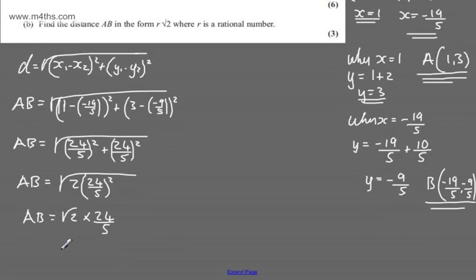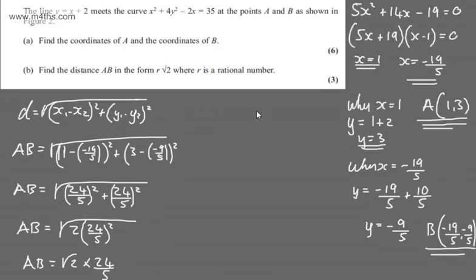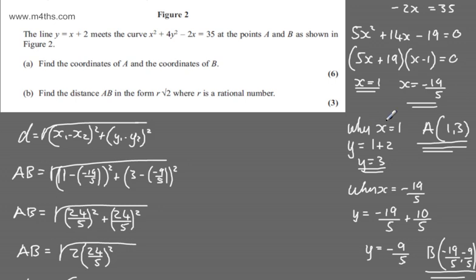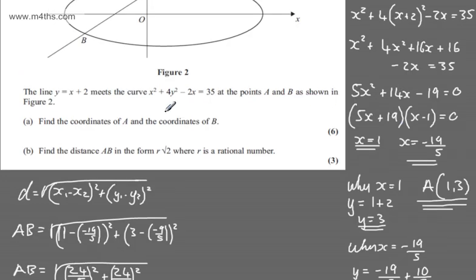Therefore, we need this in the form R root 2, we can say that AB is going to be 24 fifths root 2. So R is going to be 24 over 5, and that will give us the 3 marks. A few different approaches to that question. I think that's a fairly slick way of doing it. Again, it's open to lots of different approaches for the 3 marks, as is this one for 6 marks.